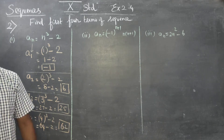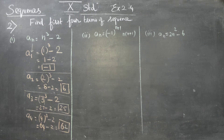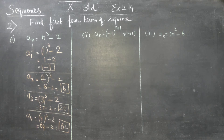We have found out A1, A2, A3, and A4. These are the four terms — the first four terms of the sequence.